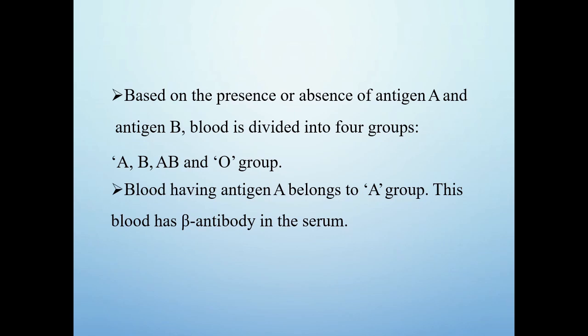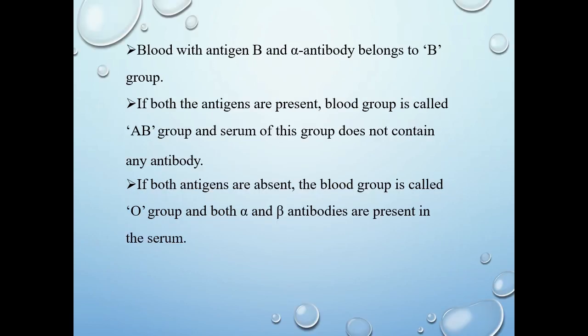Based on the presence or absence of antigens A and B, blood groups are classified into four types: A, B, AB, and O. In blood group A, antigen A is present and the antibody is anti-B. In blood group B, the antibody is anti-A. In blood group AB, both antigens are present and no antibody is found in the plasma. In blood group O, neither antigen A nor B is present, and both antibodies alpha and beta are found in the serum.